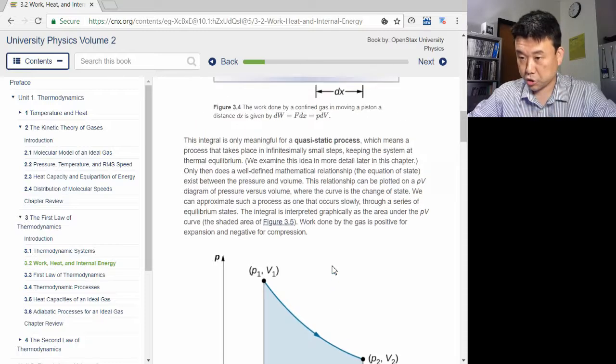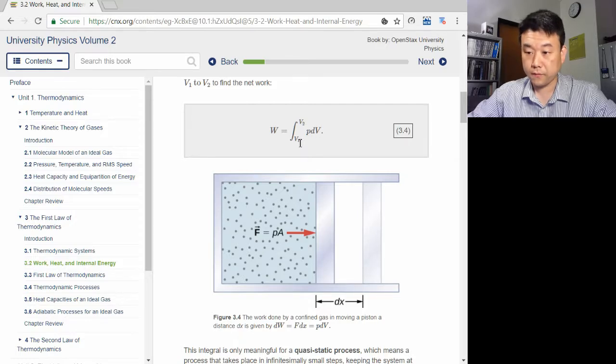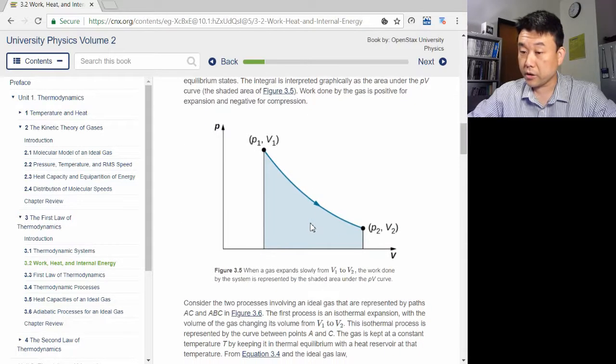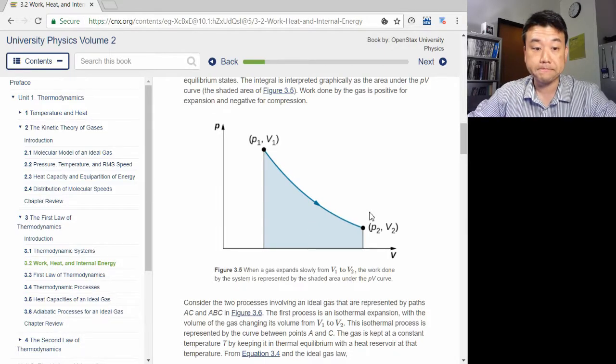And since the total work over a process is pressure as a function of volume integrated over change of volume from V1 to V2, the area under the curve in PV diagram gives the work done by the system in the process.